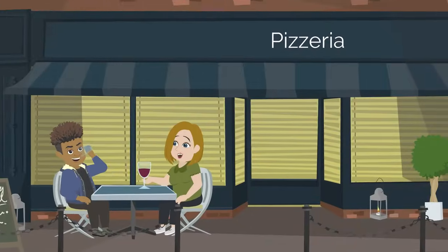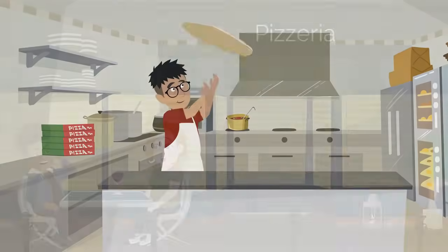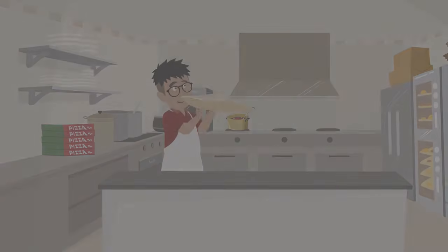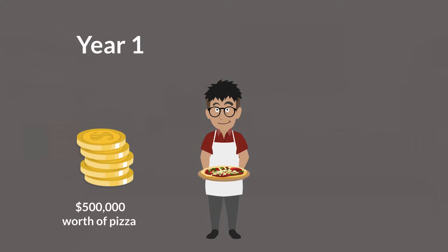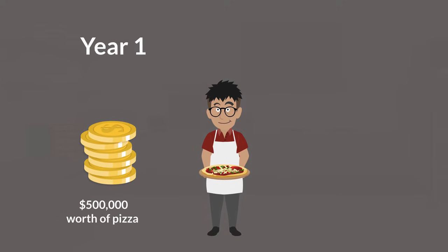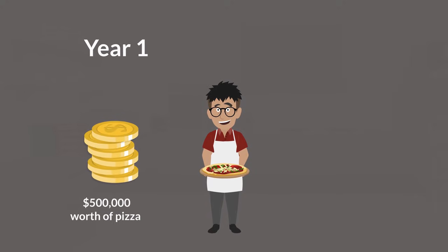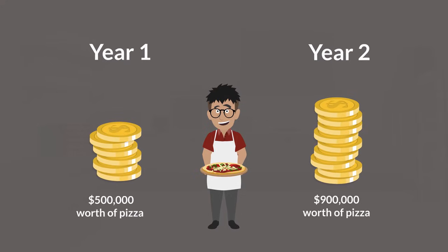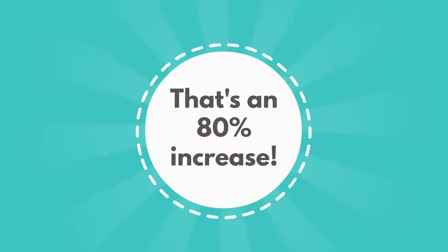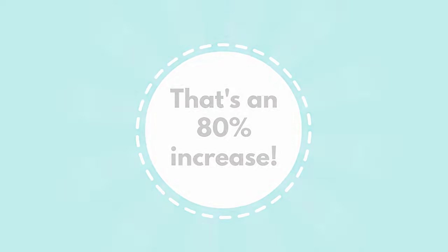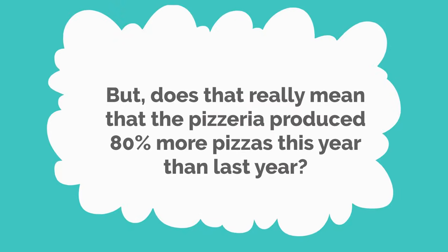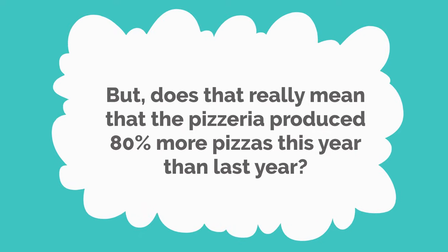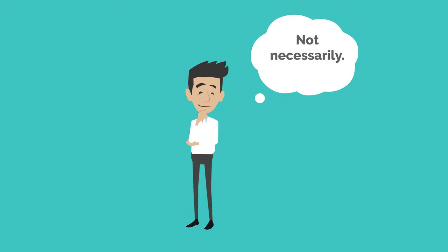Let's use pizzas as an example again. Imagine these data reflected the income generated from your pizza parlor. Year 1, you sold $500,000 worth of pizza. Year 2, you sold $900,000 worth of pizza. That's an 80% increase. But does that really mean that the pizzeria produced 80% more pizzas this year than last year?